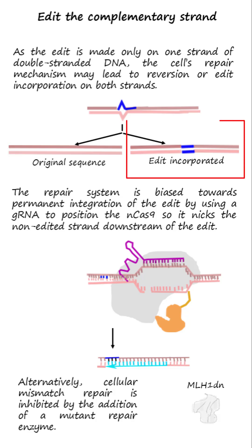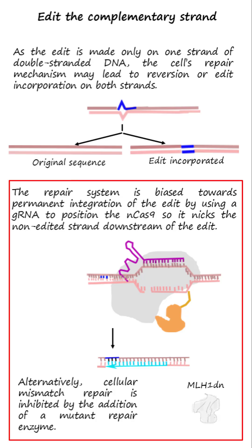Or the repair mechanism may cause the edit to permanently integrate into the genome by adding bases complementary to the edit on the non-edited strand. The repair system can be biased towards permanent integration by also using a guide RNA to position the Cas9 nickase so it nicks the non-edited strand downstream of the edit. The edit can also be integrated by adding a mutant repair enzyme that inhibits cellular mismatch repair.